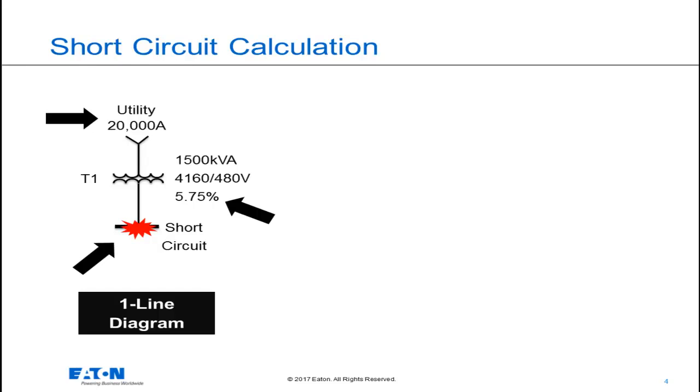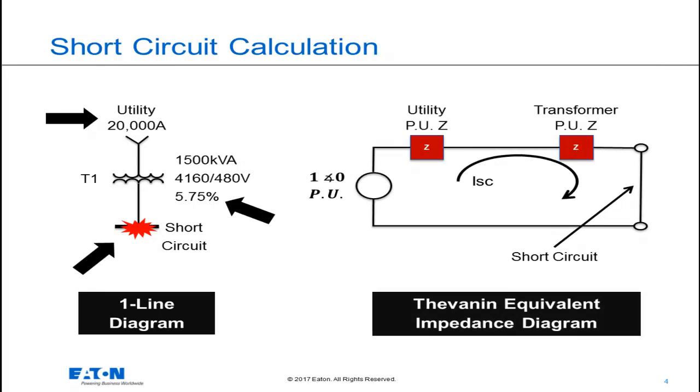This one-line diagram can be converted into a Thevenin equivalent, and that would be looking back from that short circuit to the utility. The two impedance values that we have there is the source equivalent impedance from the utility and the transformer percent impedance. Both of those are going to be placed in a per-unit format.